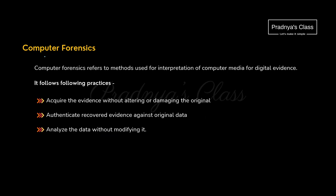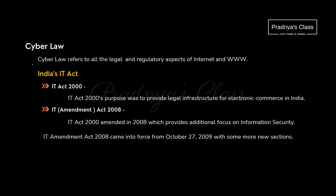Let's discuss one more topic — computer forensics. To track a scammer or catch a fraudster, we can use digital evidence. This is called computer forensics. Keep the definition in mind because you may get theory questions on it. There are some cyber laws but we need to revamp them — we need stricter cyber laws.